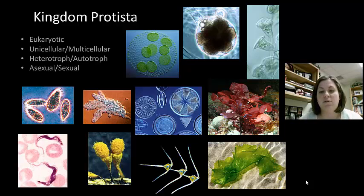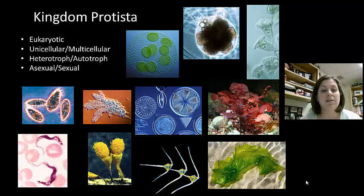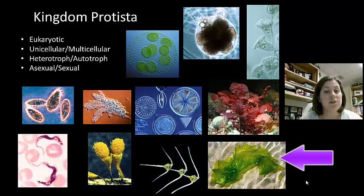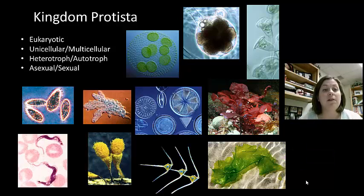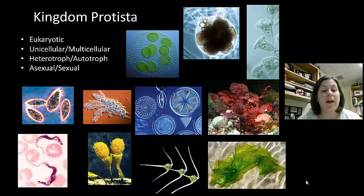Kingdom Protista contains eukaryotic organisms, which means their cells have a nucleus — this is the first group where we see cells with a nucleus. These organisms are mostly unicellular, but there are some exceptions that are multicellular. Some are heterotrophs, meaning they consume food; others are autotrophs, meaning they can make their own food. Most go through asexual reproduction, but some go through sexual reproduction. As you can see, this kingdom is very diverse.